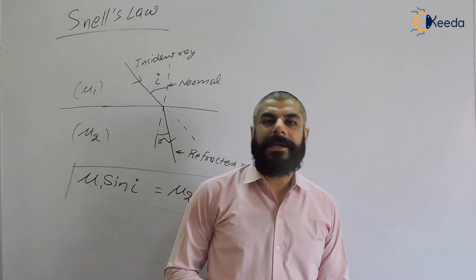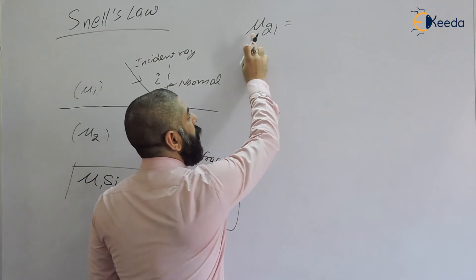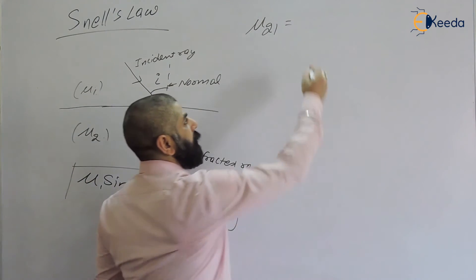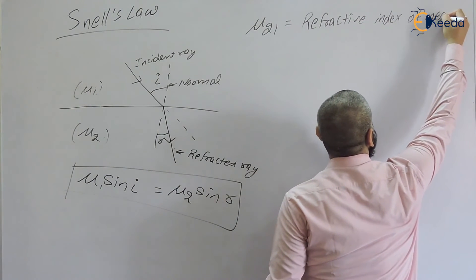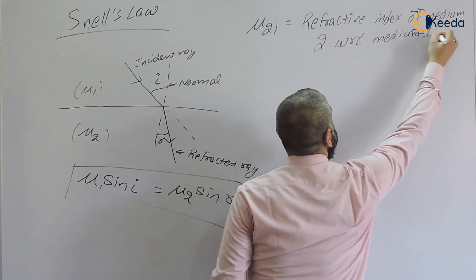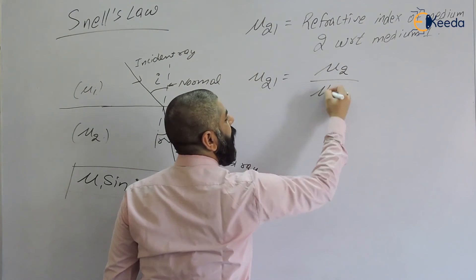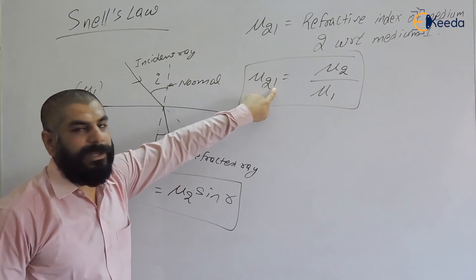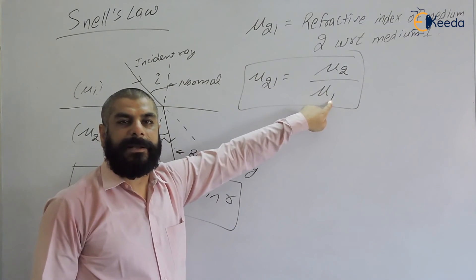There is one more term called relative refractive index. The notation ₂n₁ is read as the refractive index of medium 2 with respect to medium 1. It is defined as the refractive index of medium 2 divided by the refractive index of medium 1 — that is, mu-2 divided by mu-1, which equals the refractive index of medium 2 with respect to air divided by the refractive index of medium 1 with respect to air.